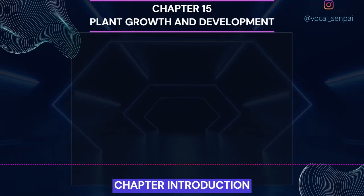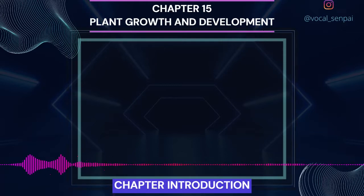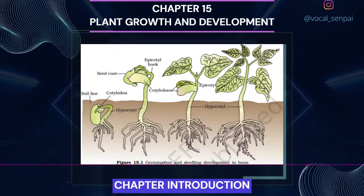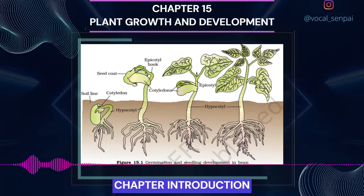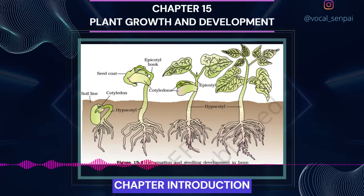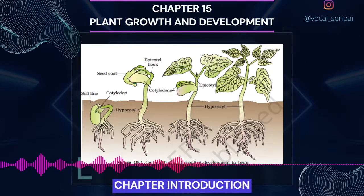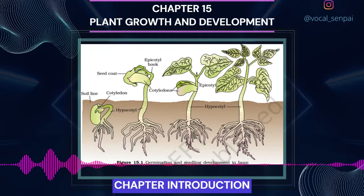Chapter 15. You have already studied the organization of a flowering plant in Chapter 5. Have you ever thought about where and how the structures like roots, stems, leaves, flowers, fruits and seeds arise and that too in an orderly sequence? You are, by now, aware of the terms seed, seedling, plantlet, mature plant. You have also seen that trees continue to increase in height or girth over a period of time. However, the leaves, flowers and fruits of the same tree not only have limited dimensions but also appear and fall periodically and sometimes repeatedly. Why does vegetative phase precede flowering in a plant?